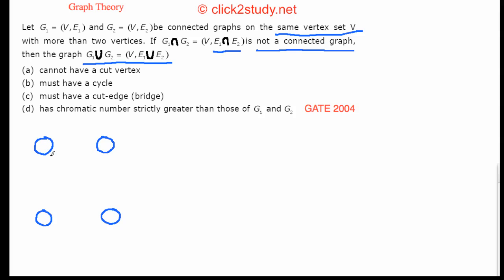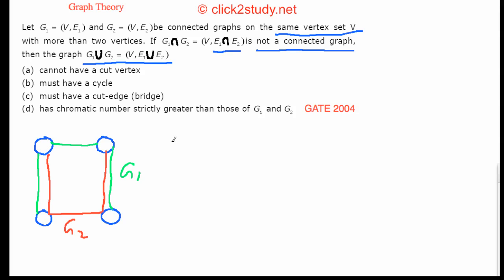Suppose this is the vertex set. I'll draw G1 in green — this is just one of several possible examples. The constraint is that both graphs share the common vertex set, and if you take G1 intersection G2 — the intersection of their edges on the same vertex set — you must get a disconnected graph. So here is G2 drawn in red.